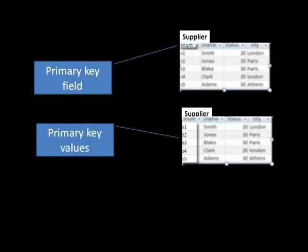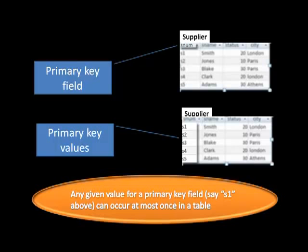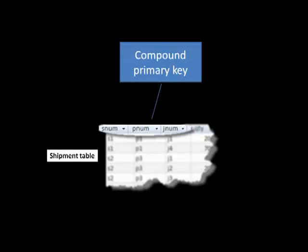So when you say what is the primary key for the supplier table, the answer is SNUM — the supplier number. Any given value for a primary key field can occur at most once in a table — you can't have two S1s in the supplier table.